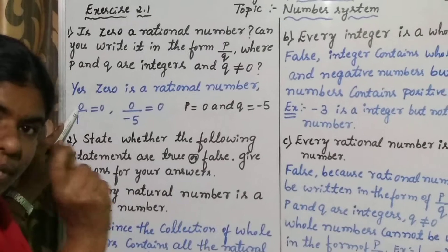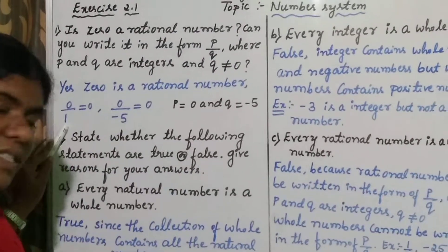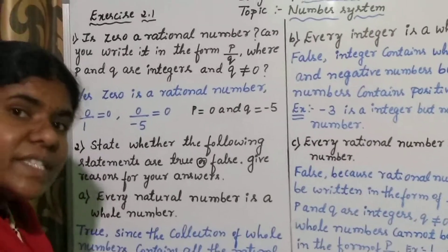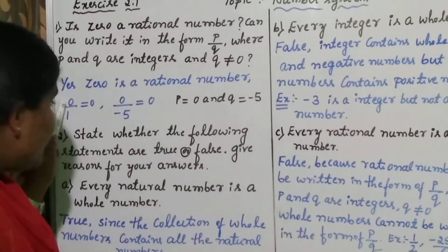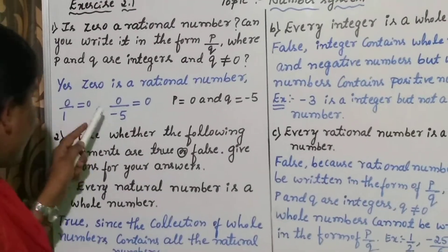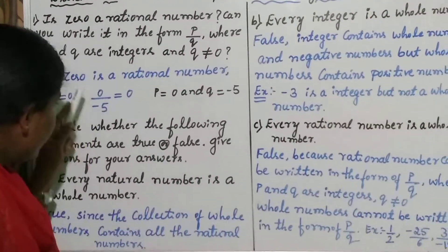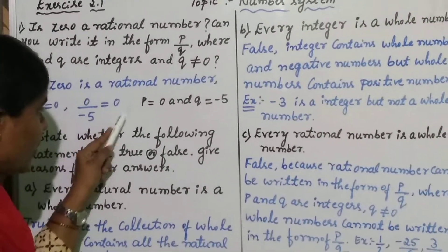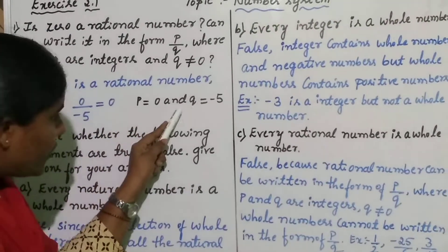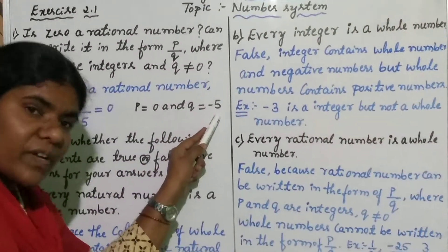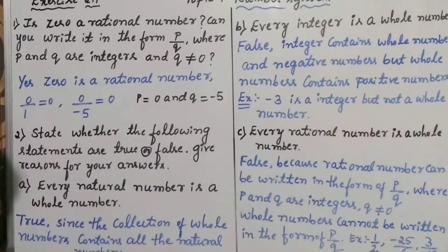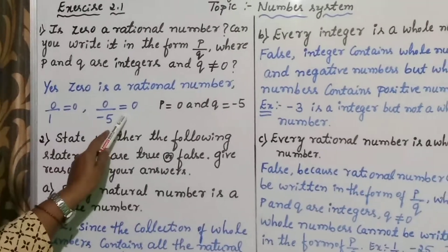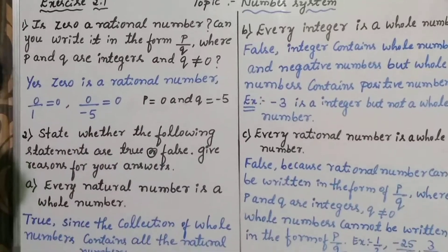Here, 0 is the P value and 1 is the Q value. Observe carefully — Q value does not equal to 0, but P value you can take as 0, no problem. Another example: 0 divided by minus 5 equals 0. Here also, P value is 0 and Q equals minus 5. Therefore, these two numbers are in the form of P by Q, so these two are examples of rational numbers.